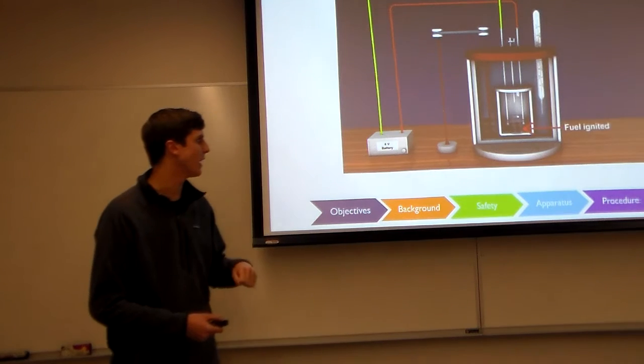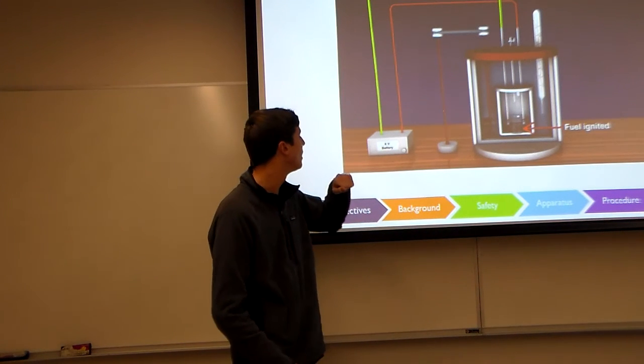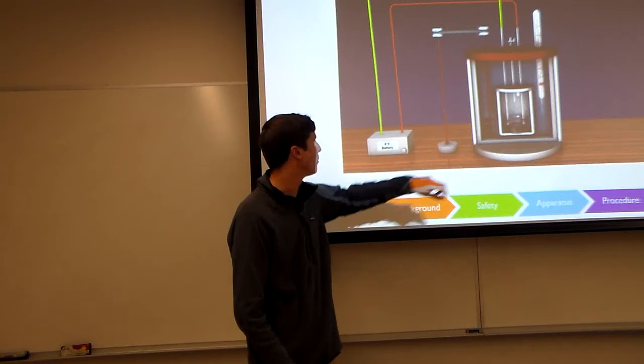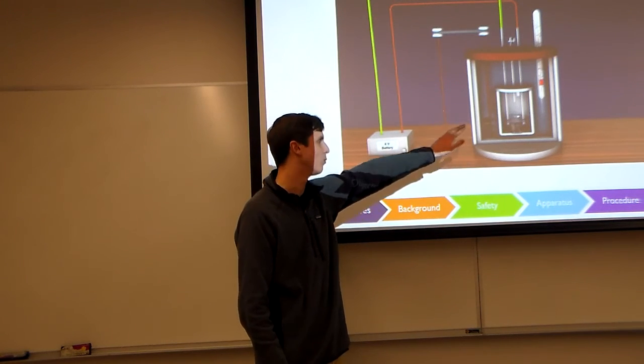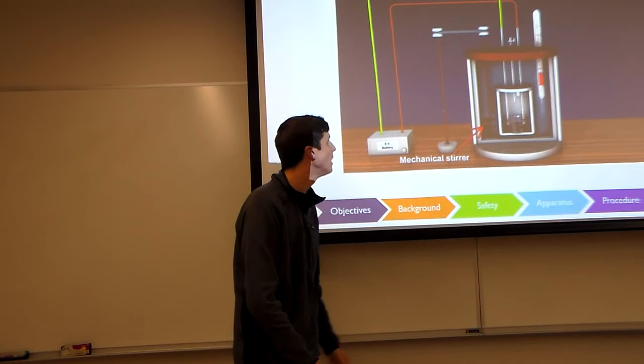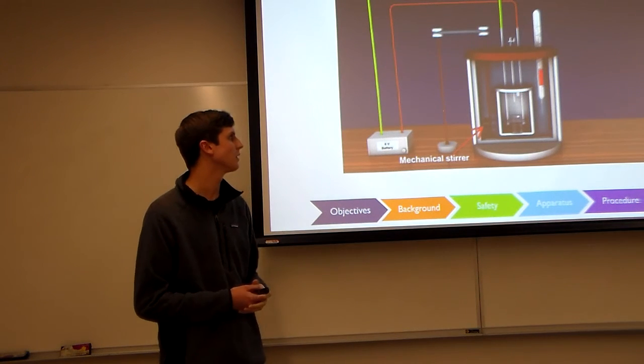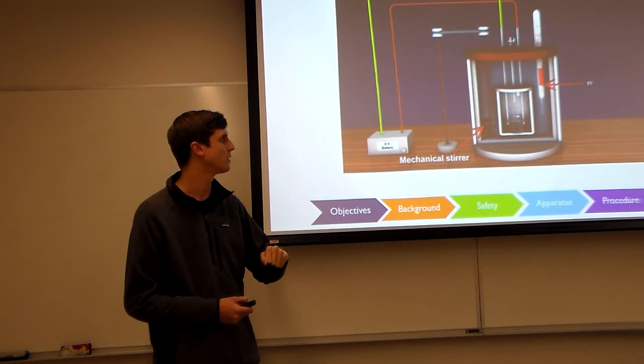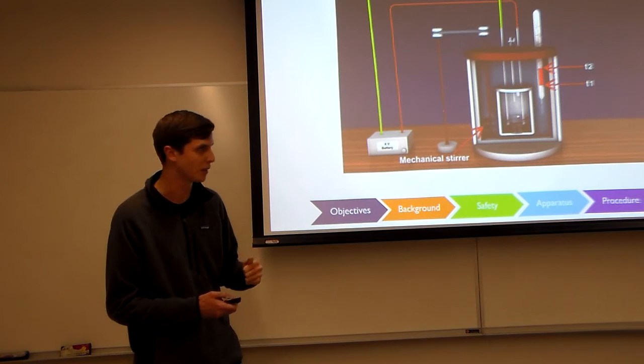This is just a little schematic showing what's going to happen here. When we ignite the fuel from the ignition, we have the water stir motor going. You see the temperature rising on the thermocouple. It's going to start at T1, which would be zero, and it's going to rise up to a temperature of T2, and that's going to be our equilibrium point.